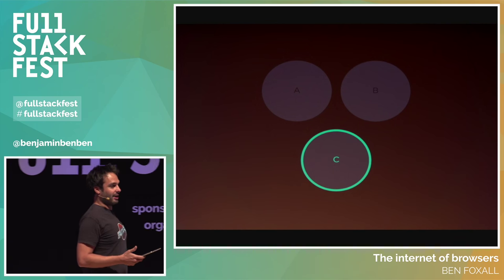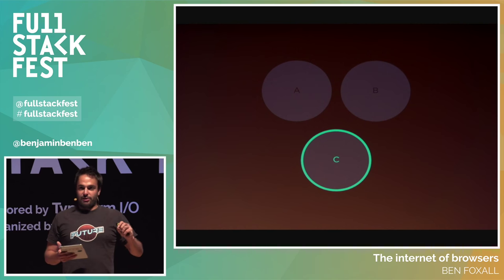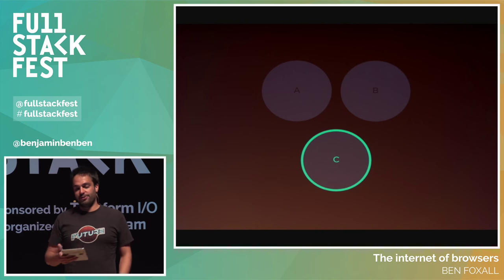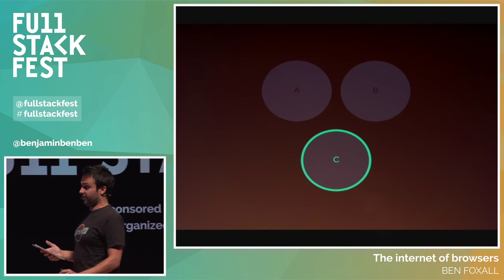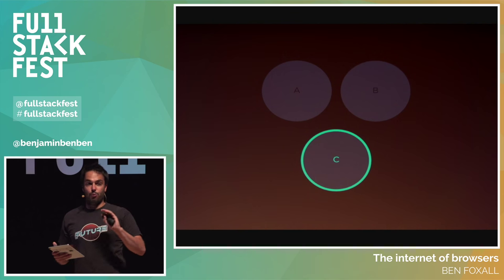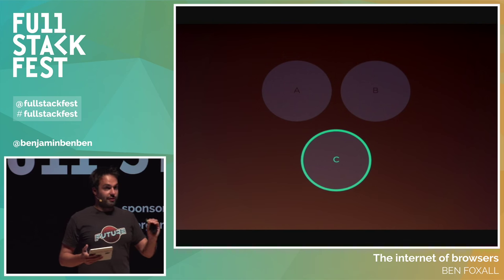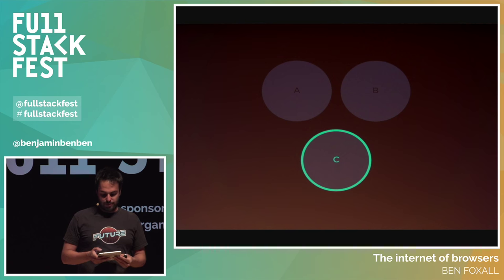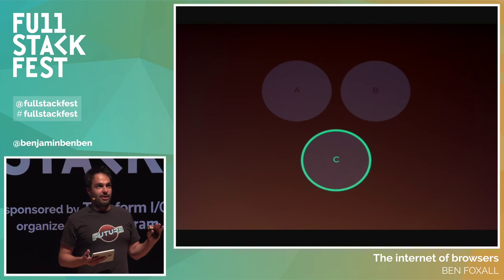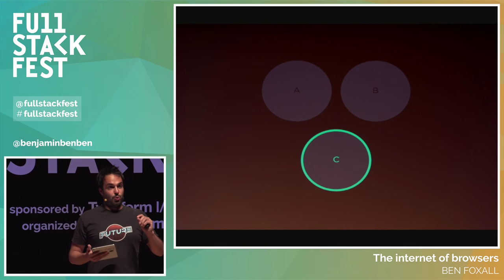We've got those two data points, and we need a third point to work out how they relate to each other. So we're going to press the C button at exactly the same time — everyone together. Once you've done that, our devices should know roughly where they are in the room. I'm going to count down three, two, one, and then say go — press it on the go, not the one.